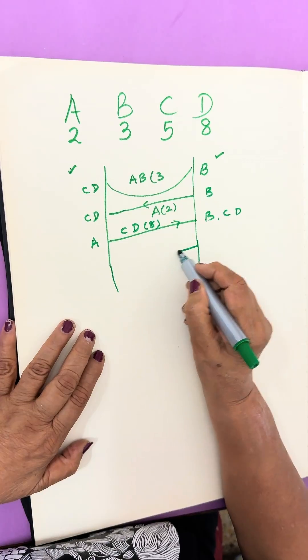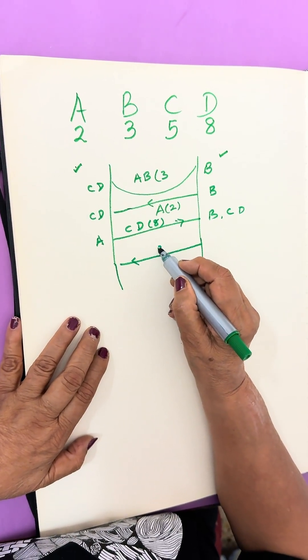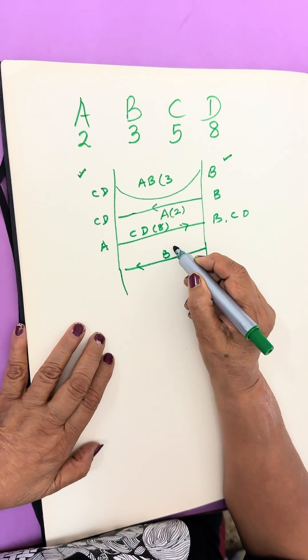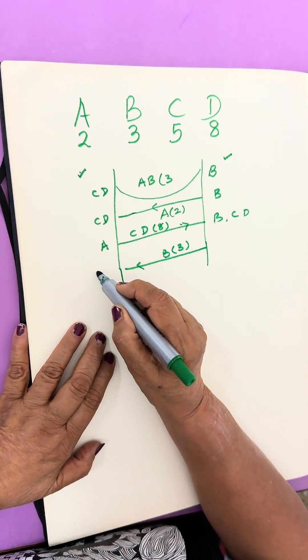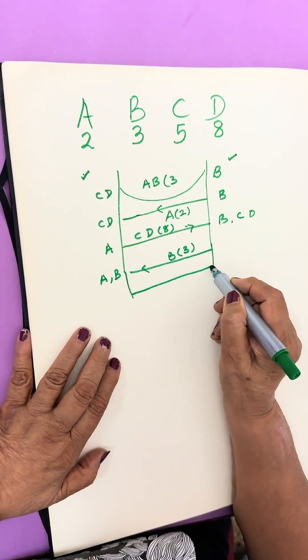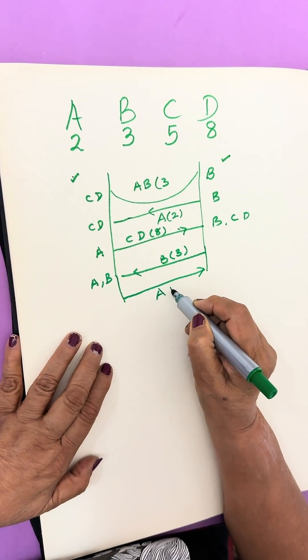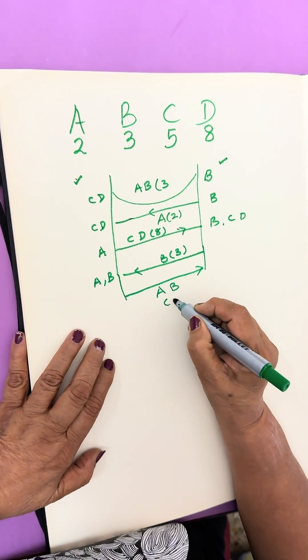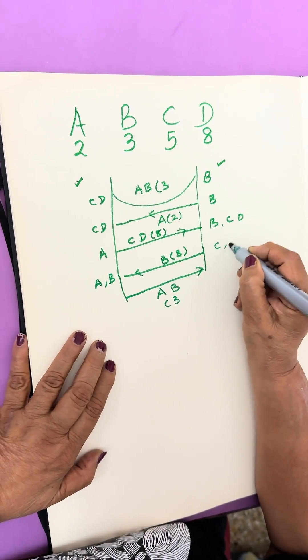Now B will come back and B will take 3 minutes to cross. Now A and B are on this side, so A and B will cross together and they will take 3 minutes.